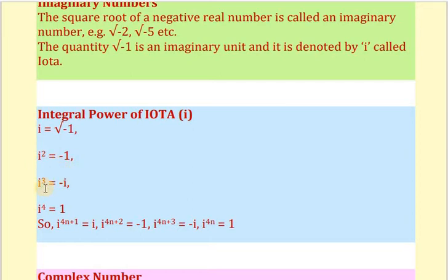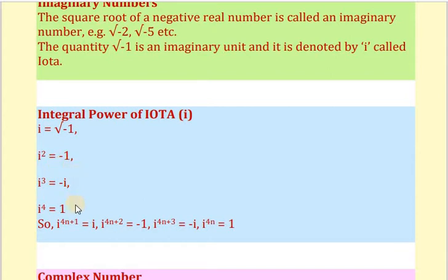Similarly, i cubed. We can write i cubed as i squared into i, and the value of i squared is minus 1. So minus 1 into i is minus i. Therefore, the value of i cubed is minus i. Now, i to the power 4 can be written as i squared whole squared, and since i squared is minus 1, squaring minus 1 gives positive 1. So the value of i to the power 4 is positive 1.